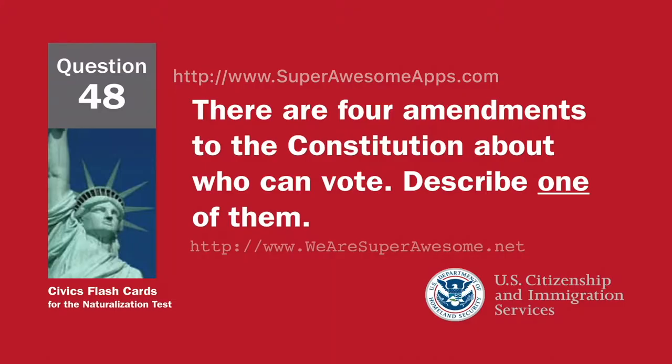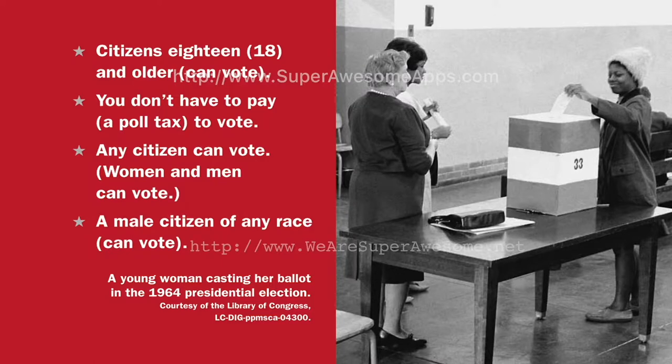There are four amendments to the Constitution about who can vote. Describe one of them. Citizens 18 and older can vote. You don't have to pay a poll tax to vote. Any citizen can vote. Women and men can vote. A male citizen of any race can vote.